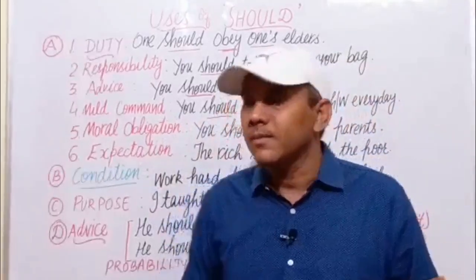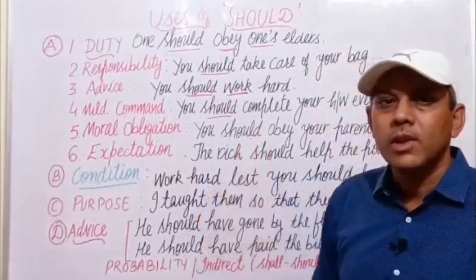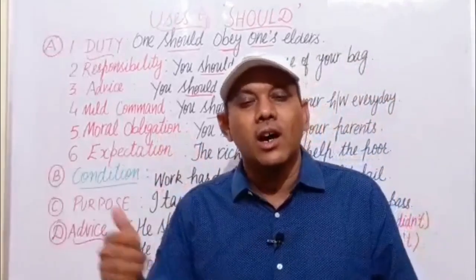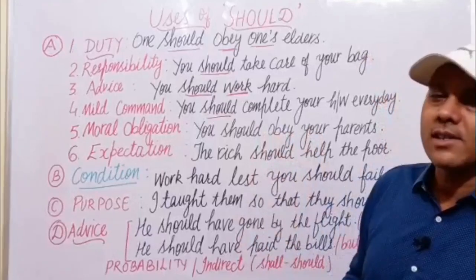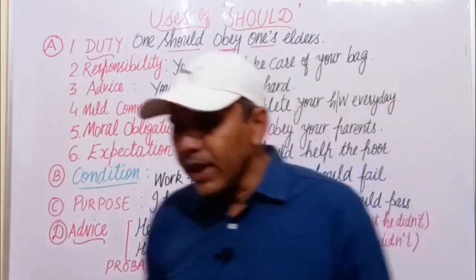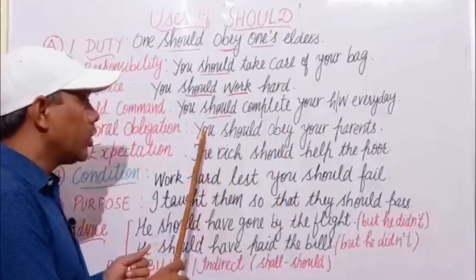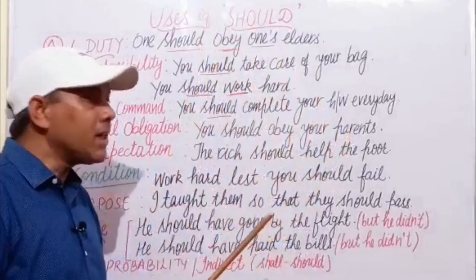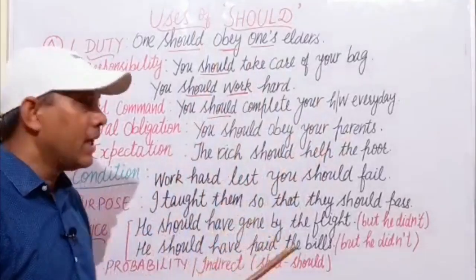Next is moral obligation. We use should to express the moral obligation of someone in a sentence. For example: you should obey your parents. This is not a strong command, but it is your moral duty, your moral obligation to obey your parents.